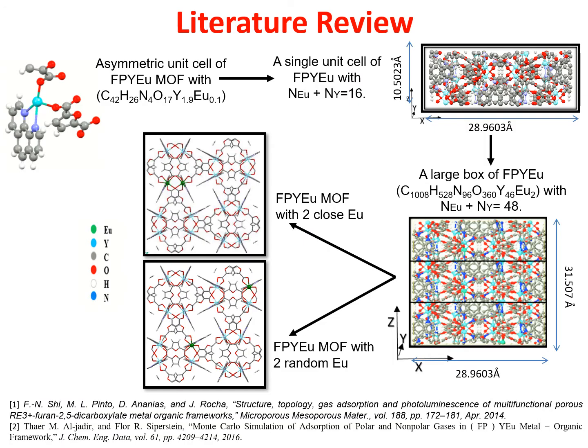The FpIU MOF has been reported by Shia et al. in 2014. FpIU MOF has two types of linkers: dicarboxylic acid and phenanthroline. The unit cell of FpIU has a total of 16 transition metal atoms. Therefore, it is impossible to achieve the Y:U ratio of 19:1 in the structural formula of a single unit cell, as only an integer number of atoms can be modeled. Modeling a 19:1 ratio of Y:U requires at least five unit cells with 76 Y and 4 U atoms, but the size of such a simulation box will require computationally intensive simulations, which may not be necessary if the distribution of metal ions in the unit cell does not play an important role in the adsorption isotherm.